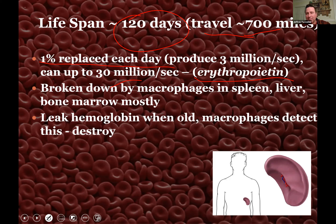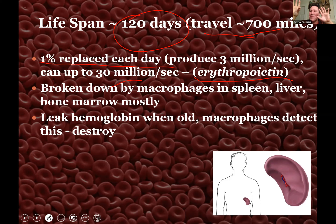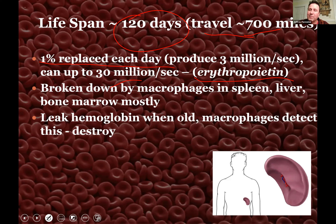Red blood cells wear out — they lose flexibility and start leaking. There are certain places in your body like a sponge where blood cells are forced through caves and channels. On the sponge are macrophages — big white blood cells — feeling out the environment. When they detect a red blood cell that can't make it through, or it's old and leaking, they destroy it. When you destroy a red blood cell you recycle the parts — including the iron. The organs that destroy red blood cells are mostly your spleen, and also your liver and bone marrow.